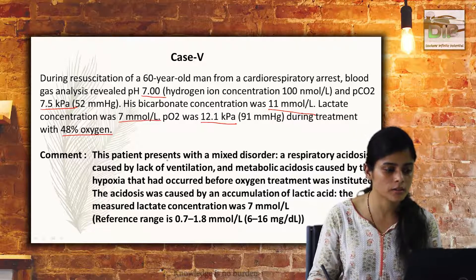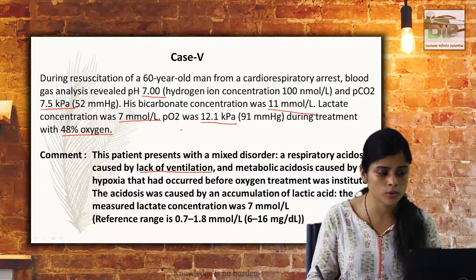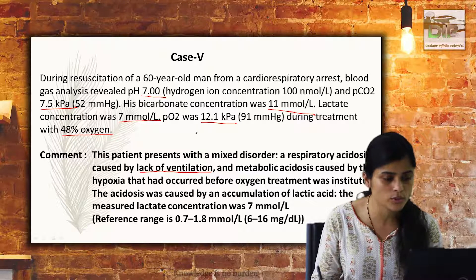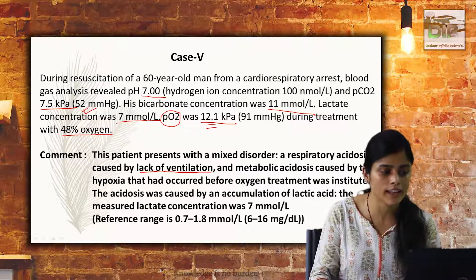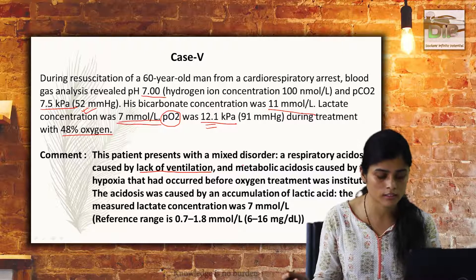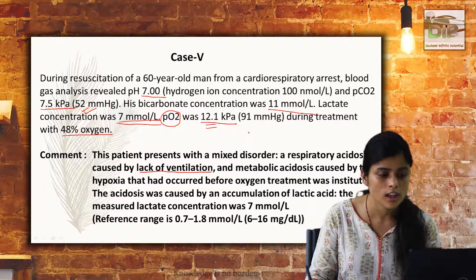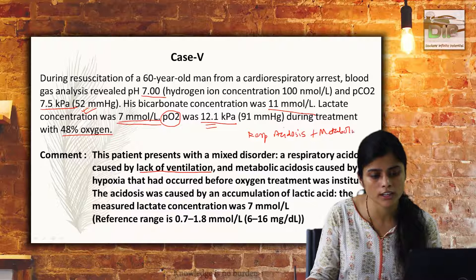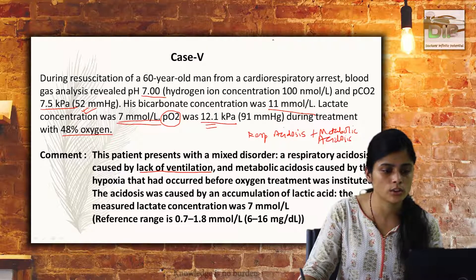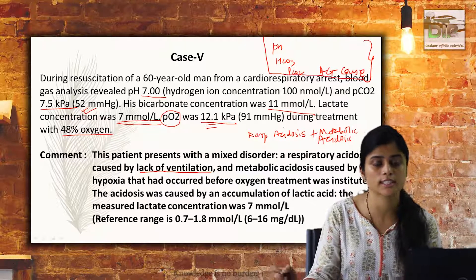Respiratory acidosis is caused by lack of ventilation, and metabolic acidosis is caused by hypoxia. Hypoxia causes accumulation of lactic acid, and since after ventilation is started PCO2 comes closer to normal, but PCO2 is still high and there is accumulation of lactic acid. Lactic acid causes more unmeasured anions to accumulate, causing lactic acidosis. This is the condition of respiratory acidosis with metabolic acidosis — a mixed disorder. The five key parameters to assess in every case of acid-base disturbance remain: pH, bicarbonate, PCO2, anion gap, and cause.